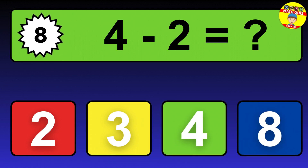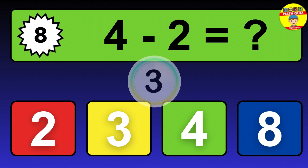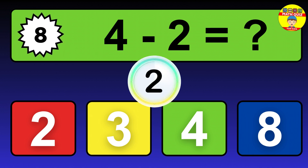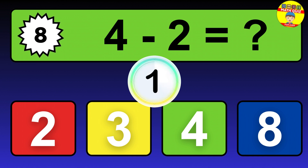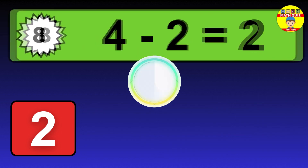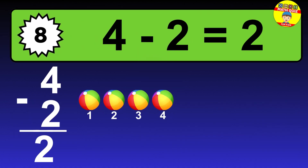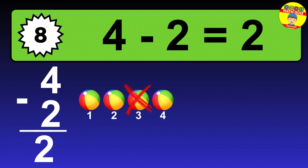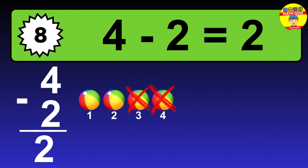Question 8. 4 minus 2 equals what? The answer is 4 minus 2 is 2. Let's count it: 1, 2.